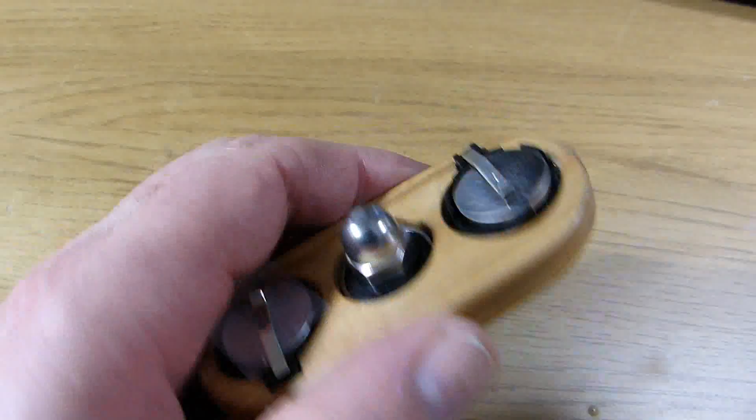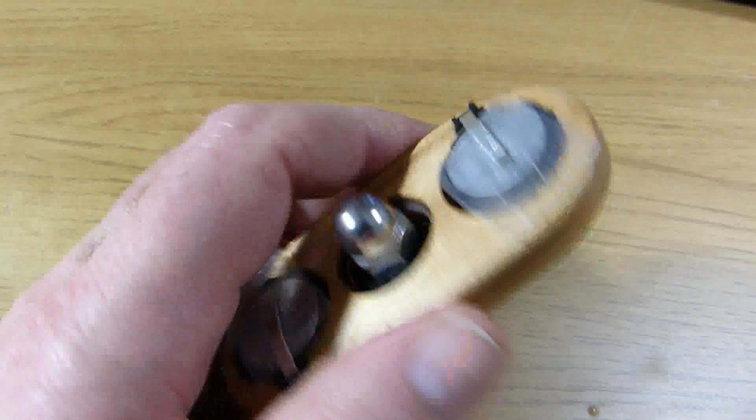To turn the LEDs off I just insert some thin plastic strips underneath the battery contacts. So that's the spinner completed.